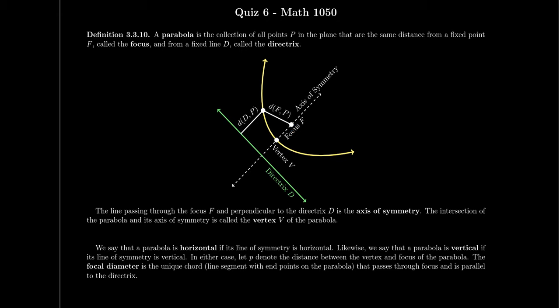Let me discuss the anatomy of a parabola. We've mentioned the focus and the directrix. If we take the line that passes through the focus and is perpendicular to the directrix, there's a unique such line, and this line is called the axis of symmetry of the parabola. The parabola will always be symmetric across the axis of symmetry. If we take the midpoint between the focus and the directrix, which lives on the axis of symmetry, that point is equidistant from both, and therefore it lies on the parabola. We call this point the vertex of the parabola.